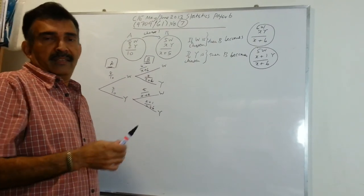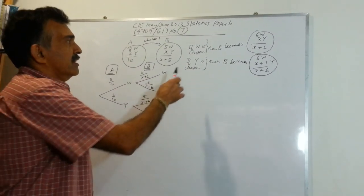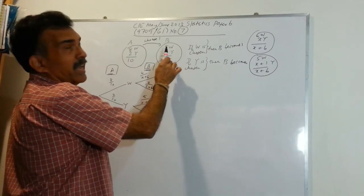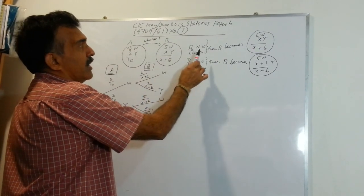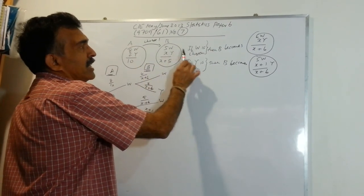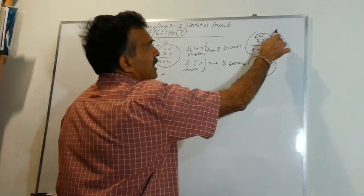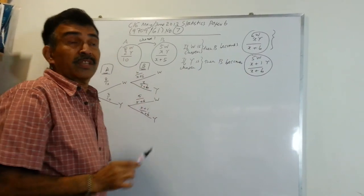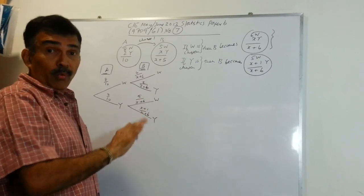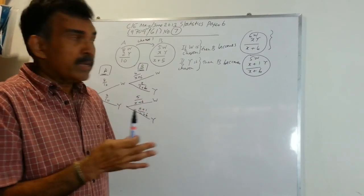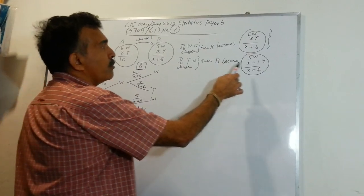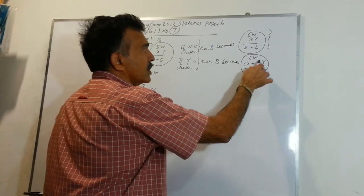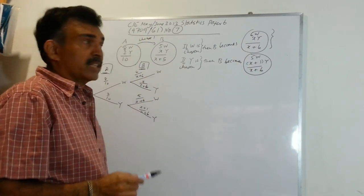Had you chosen a white from A, then box B will now contain — initially box B had five whites — so box B will now have six white and X yellow, giving us a total of X plus six balls. Had a yellow been chosen from A, then box B will have five white and X plus one yellow, giving us a total of X plus six.